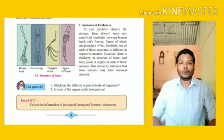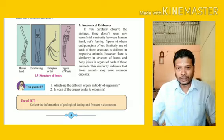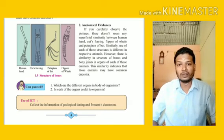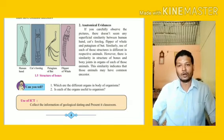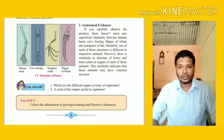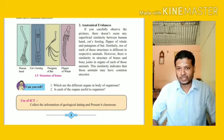The next is anatomical evidence. Anatomy is exactly opposite of morphology — it is the study of internal structure. The study of internal organs is termed as anatomy. In the picture in your book you can see the bones of different animals are shown.